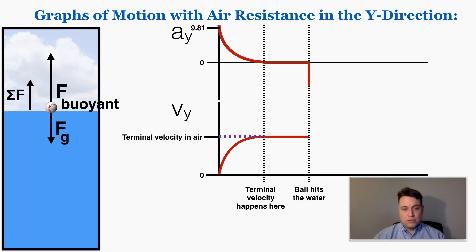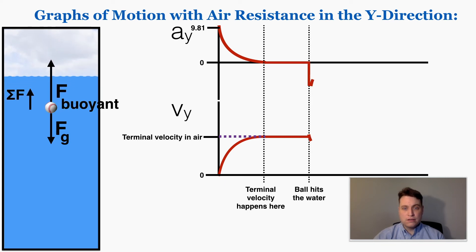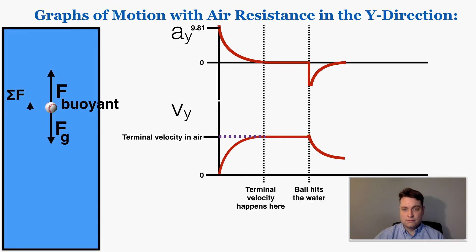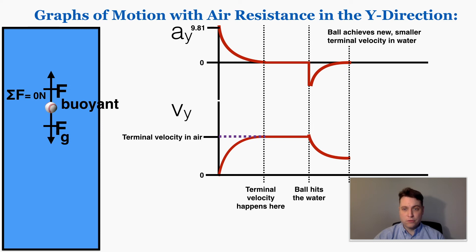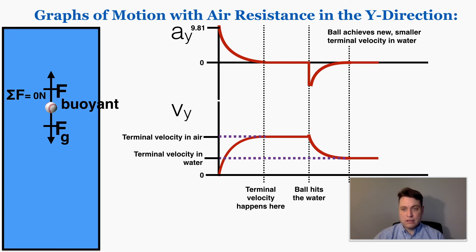For the rest of the ball's trip through water, it slows down because acceleration is pointing up while the ball moves downward, so the acceleration is taking away from the velocity. As it slows, the buoyant force shrinks because it's moving through the water less quickly, so the water puts a smaller and smaller force back on it. This continues until the buoyant force balances out gravity, and the ball reaches a new, smaller terminal velocity in the water, falling at that constant rate until it hits the bottom.